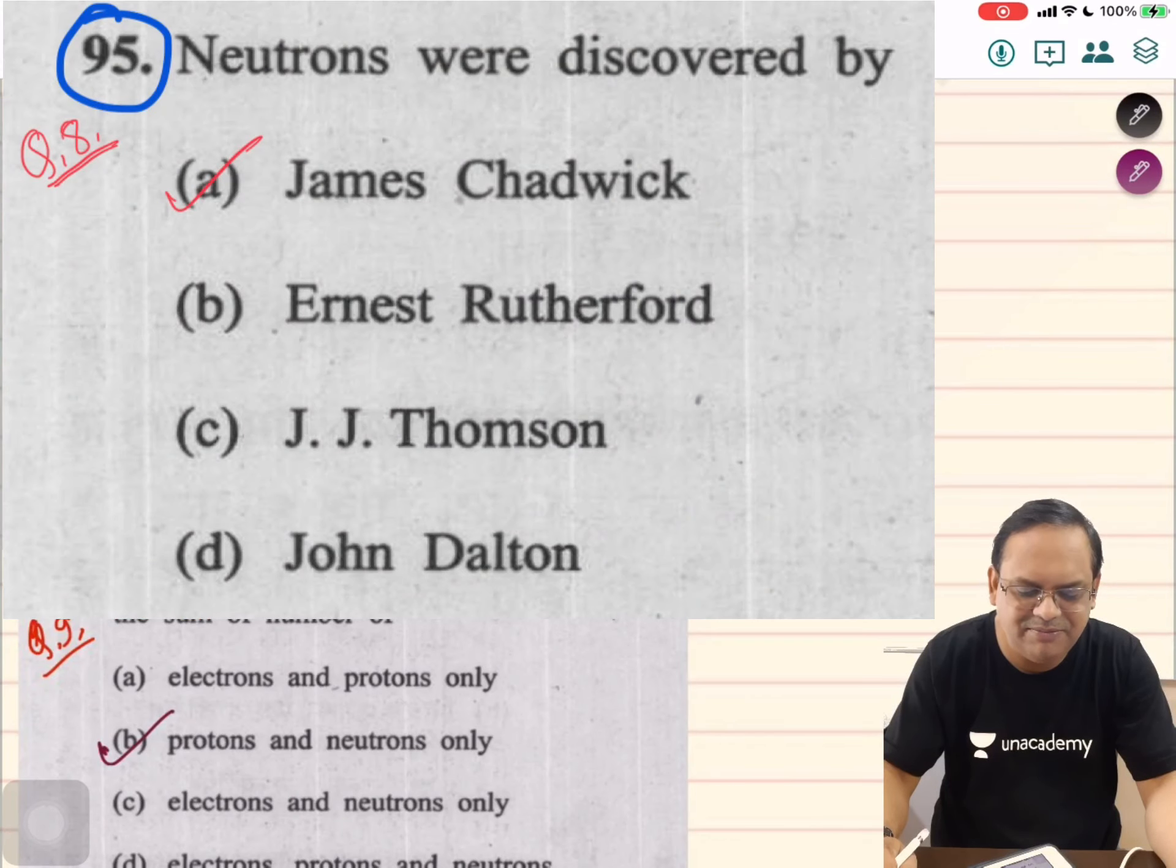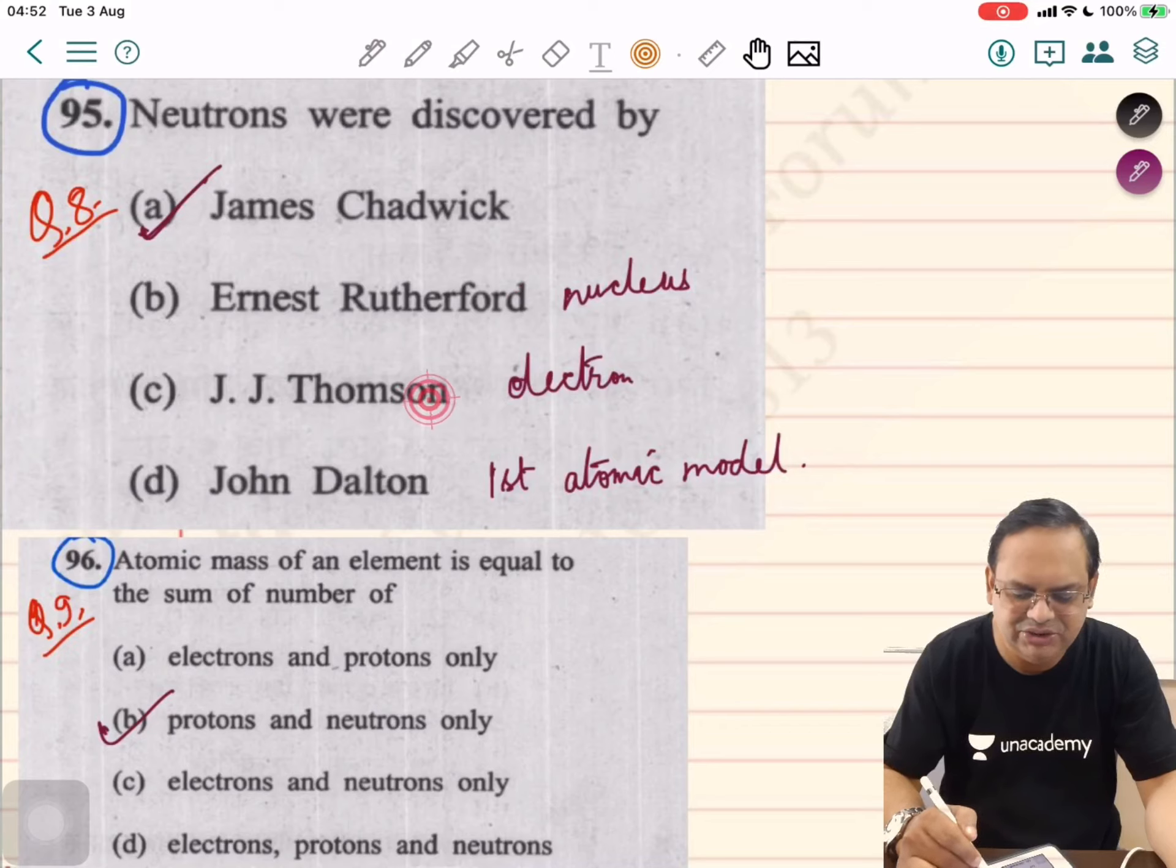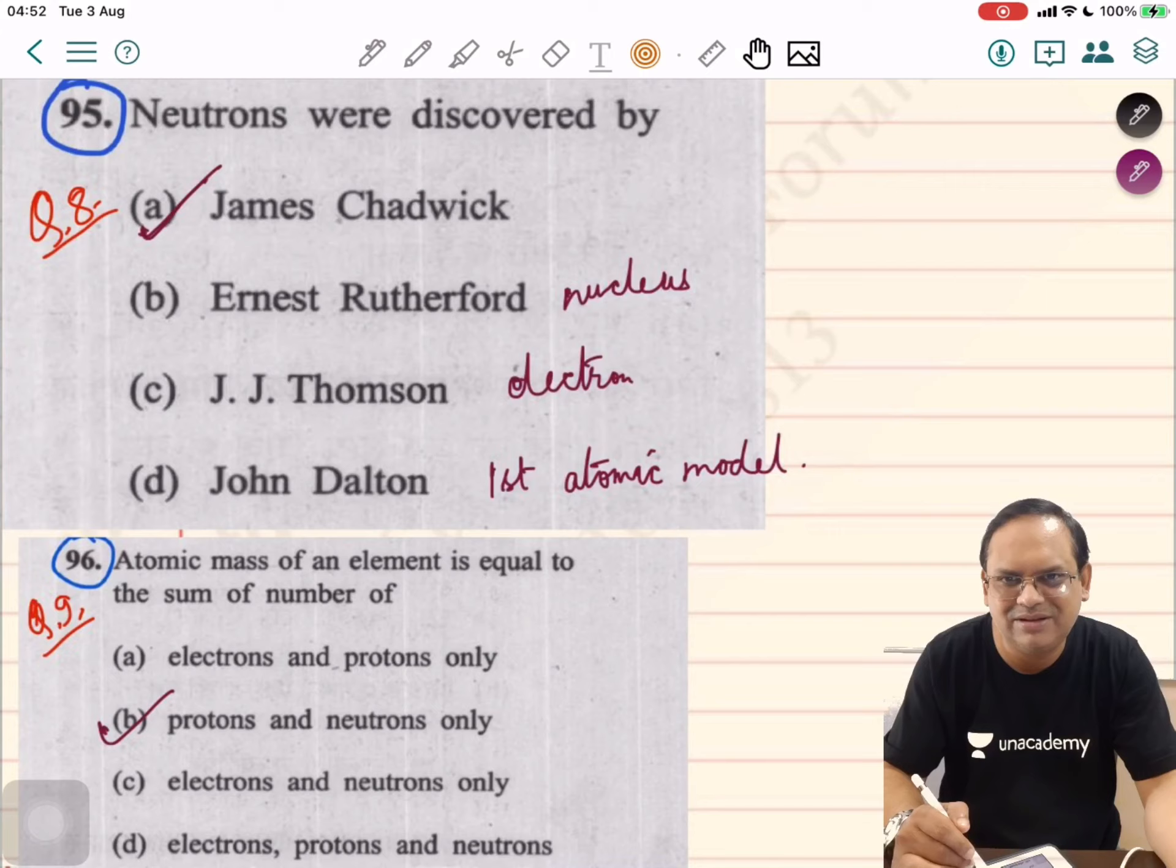In 1932, neutrons were discovered by James Chadwick, Rutherford discovered the nucleus, J.J. Thompson discovered the electron.